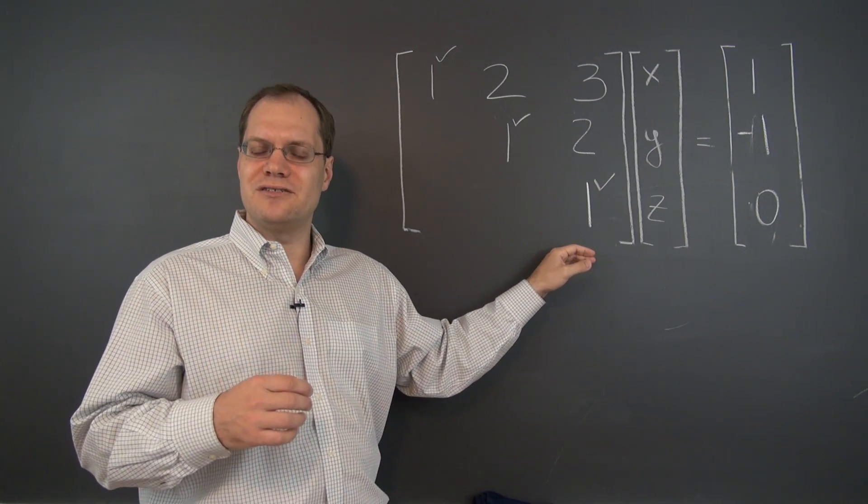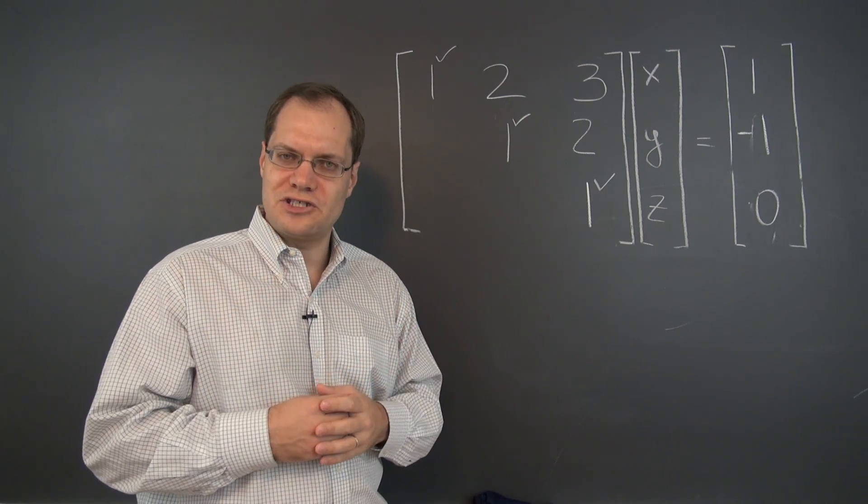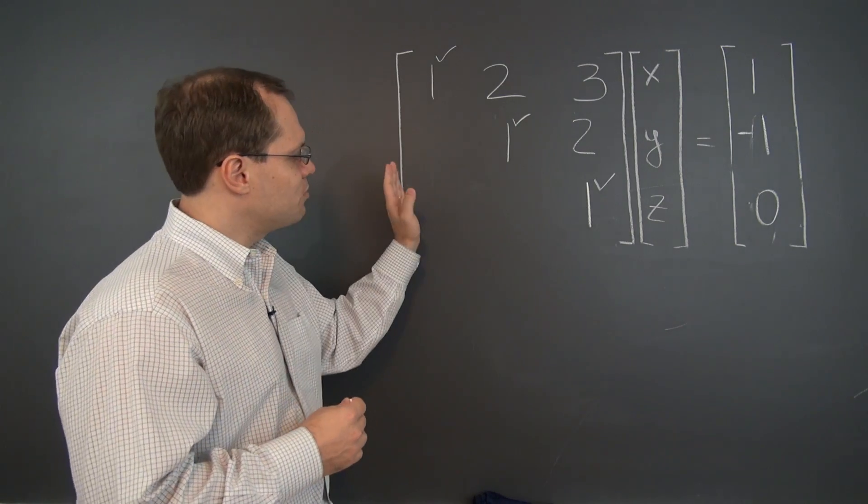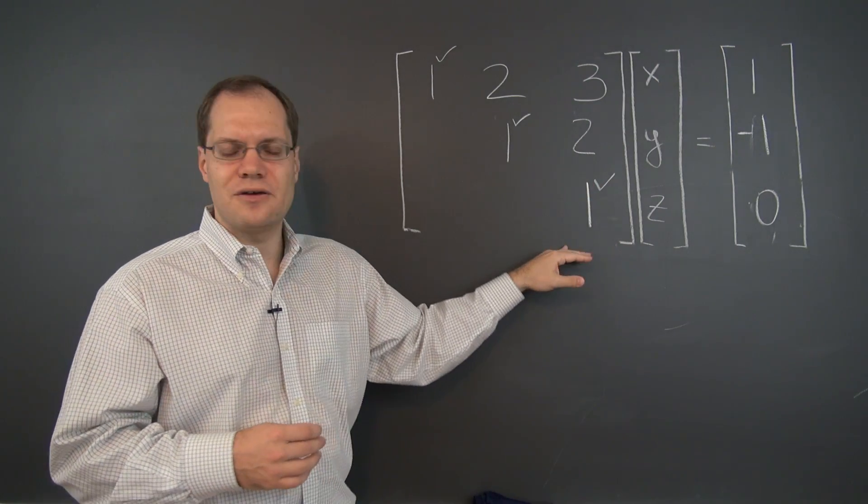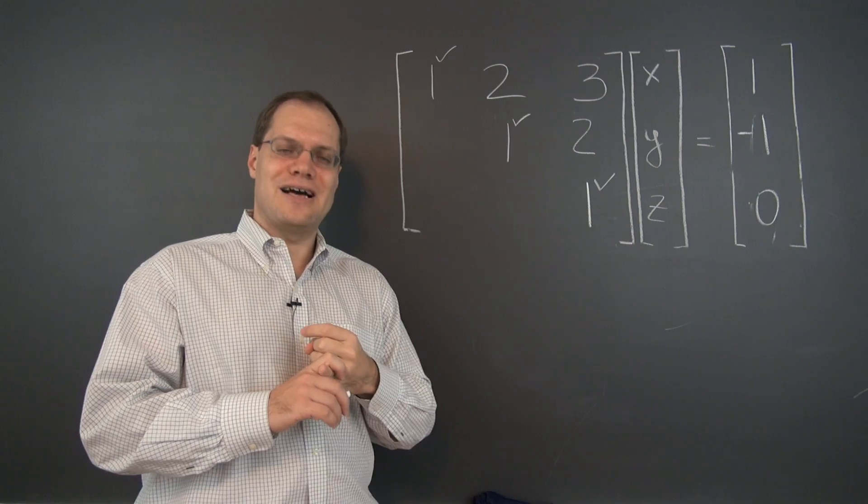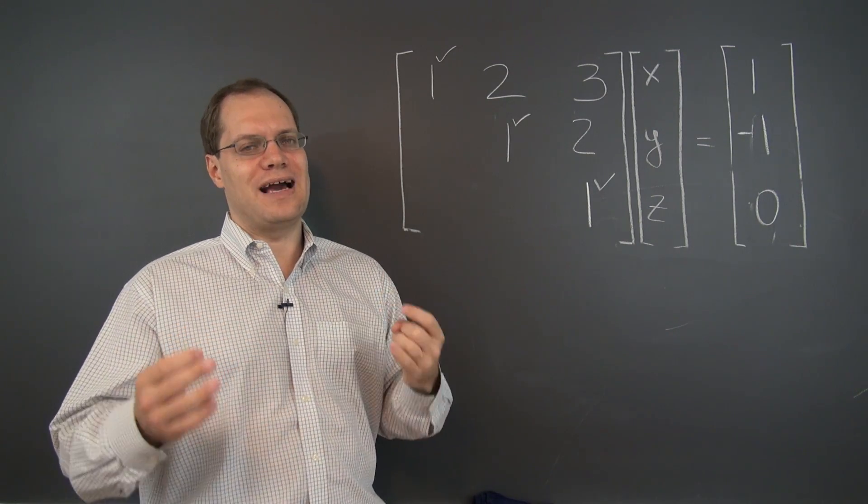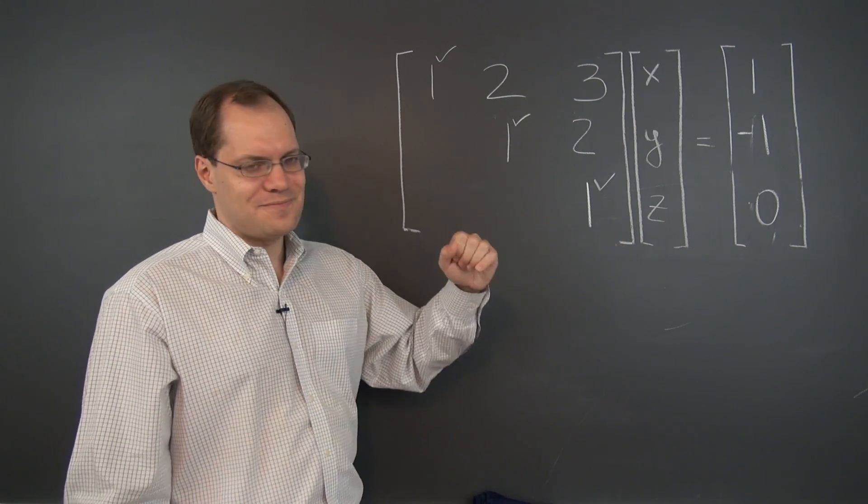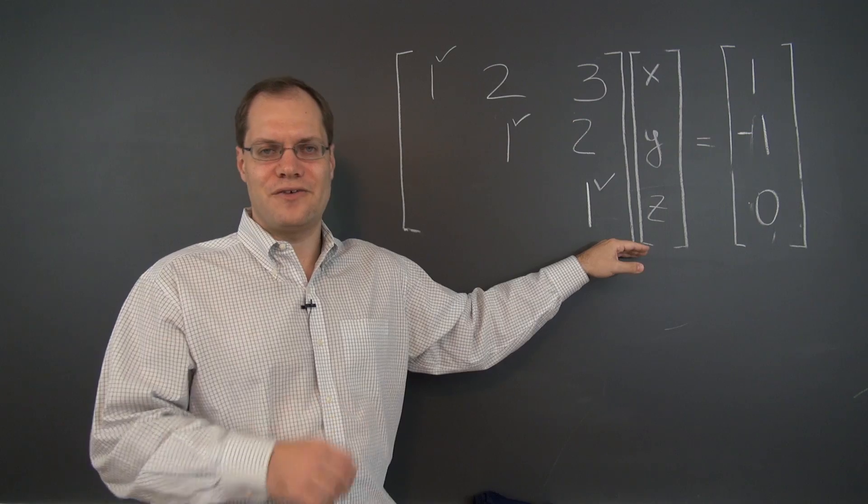And these operations, this approach to Gaussian elimination actually has some terminology associated with it. So the process of marching to the right and eliminating everything below the pivots is called Gaussian elimination. It's the Gaussian elimination part of Gaussian elimination, bad terminology. So we're actually done with that part of Gaussian elimination.